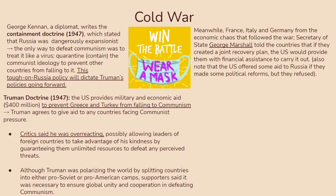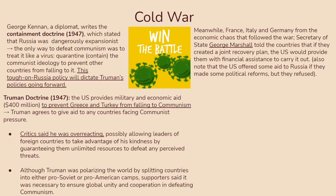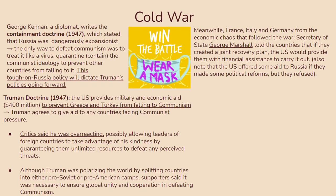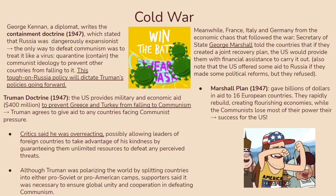France, Italy, and Germany were still struggling from the economic chaos following the war. Secretary of State George Marshall told these countries that if they created a joint recovery plan, the US would provide financial assistance to carry it out. The US also offered some aid to Russia if they made political reforms, but Russia refused. This eventually turned into the Marshall Plan in 1947, which gave billions of dollars in aid to 16 European countries, allowing them to rapidly rebuild and creating flourishing economies while communists lost most of their power in those areas.